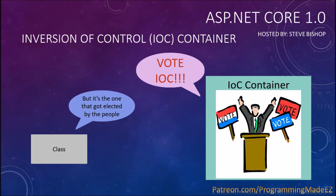That silly little skit was just to give you a demonstration of the relationship between the classes in an ASP.NET application and an IOC container. The classes basically ask the ASP.NET Framework for an instance of a concrete class that matches whatever the dependency is. The IOC container's job is to provide that class, returning back a concrete instance of the class that the requesting class needs for dependency injection.